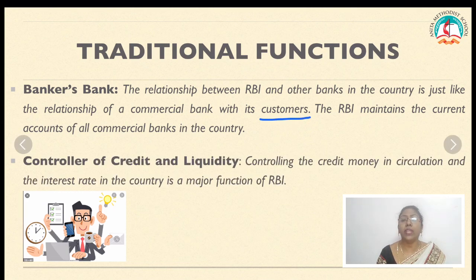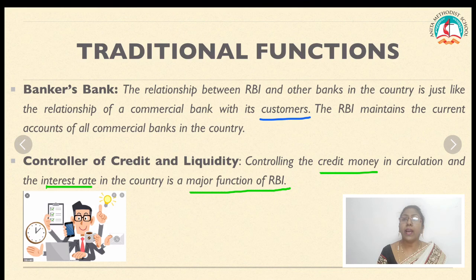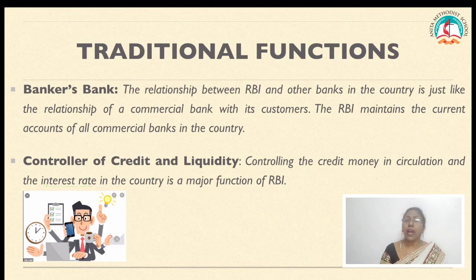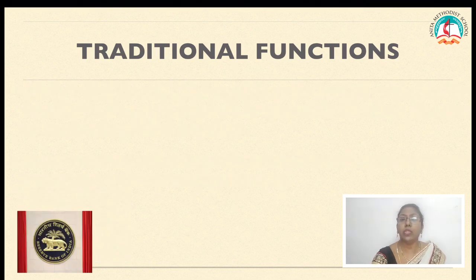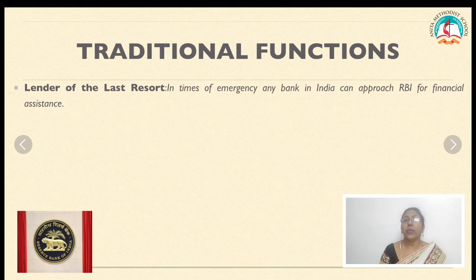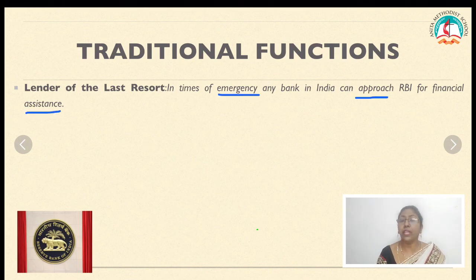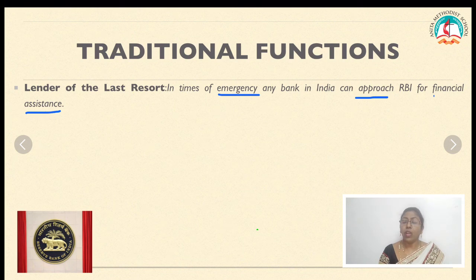RBI fixes the interest rates for commercial banks, and according to those rates, commercial banks accept and give interest rates to customers. For this purpose, it uses quantitative and qualitative methods of credit control. The next traditional function is lender of last resort. In times of emergency, if commercial banks suffer losses, RBI provides them financial assistance. When all other sources of credit are exhausted, banks obtain money from the RBI — hence it is called the lender of last resort.